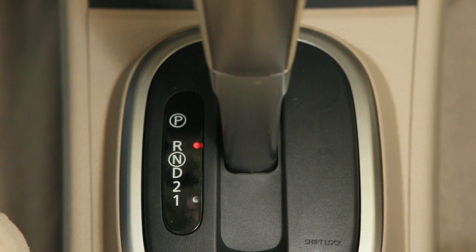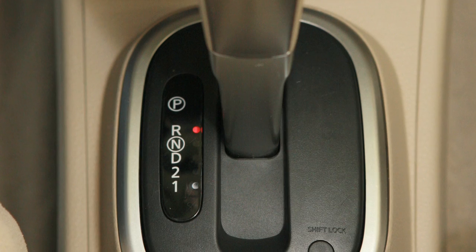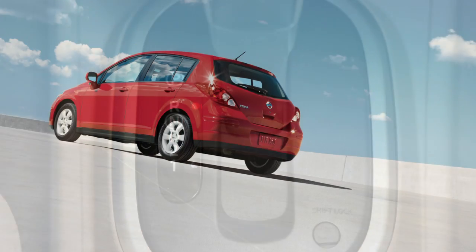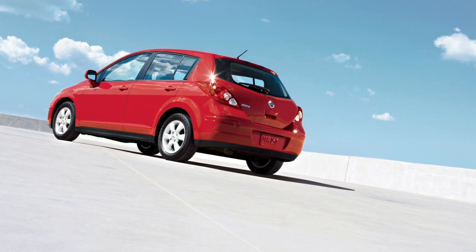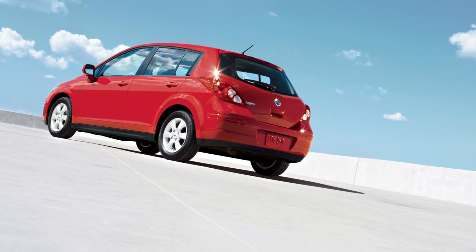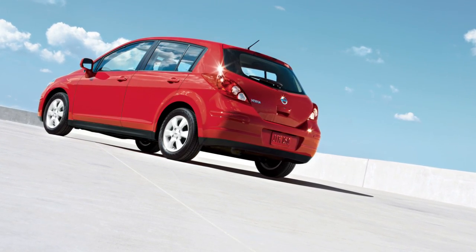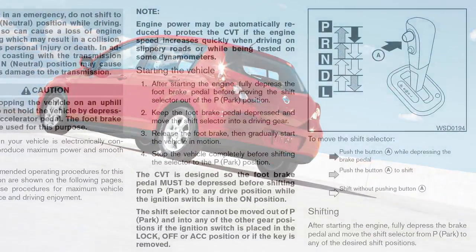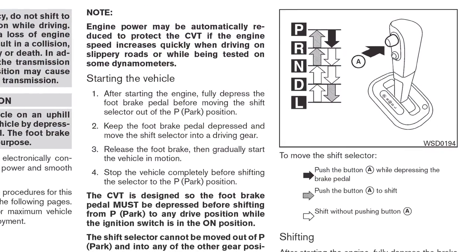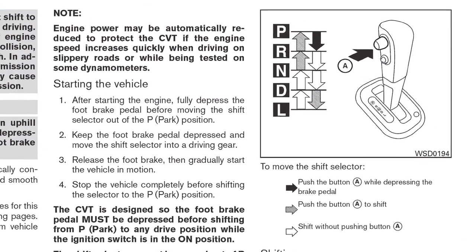Whereas a typical automatic has four or five fixed gears, CVT has an infinite number. This eliminates the jolt of conventional shifting and hunting for the right gear when driving up a hill. CVT adjusts output to keep the engine in the most efficient RPM range.